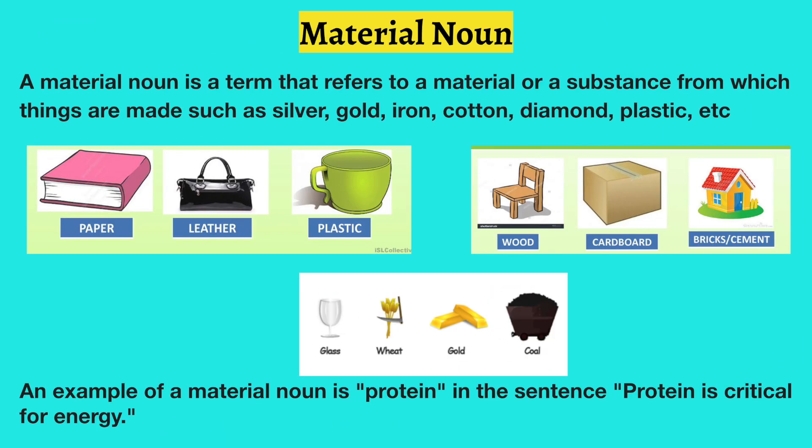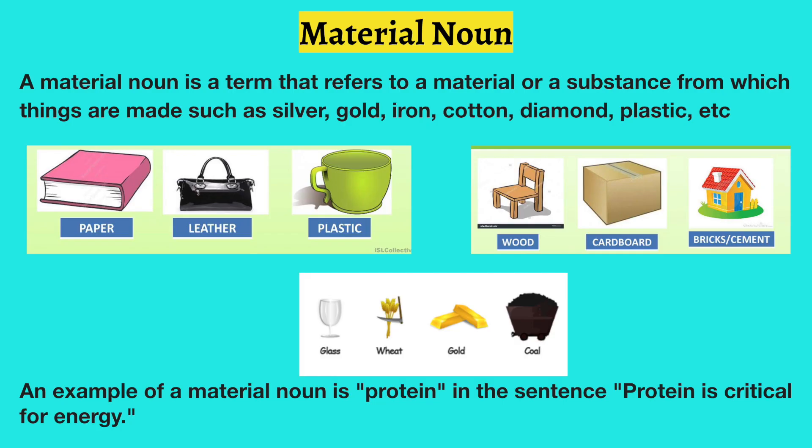What are you sitting on? I assume it's a chair, a couch, a table — some of you might even be on your bed or on the floor. All these things are made up of something, a particular kind of material. So we are now going to look at the material noun. This noun refers to a material or substance from which things are made — it can be silver, gold, cotton, wool. For example: 'I love to wear silk clothes' — silk is the material noun. Other examples: protein is critical for energy, a wooden chair, a cardboard box, a glass tumbler, a gold chain, a brick house.